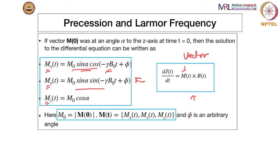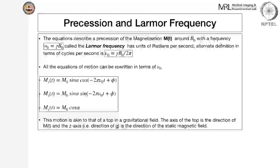From this equation, we see that the Mx and My components are time-periodic, which means there is a precession happening in the XY plane. Based on this equation, we saw that omega-0 = gamma * B0 is called the Larmor frequency and has units of radians per second. We can always rewrite this as nu-0 = gamma * B0 / 2-pi.